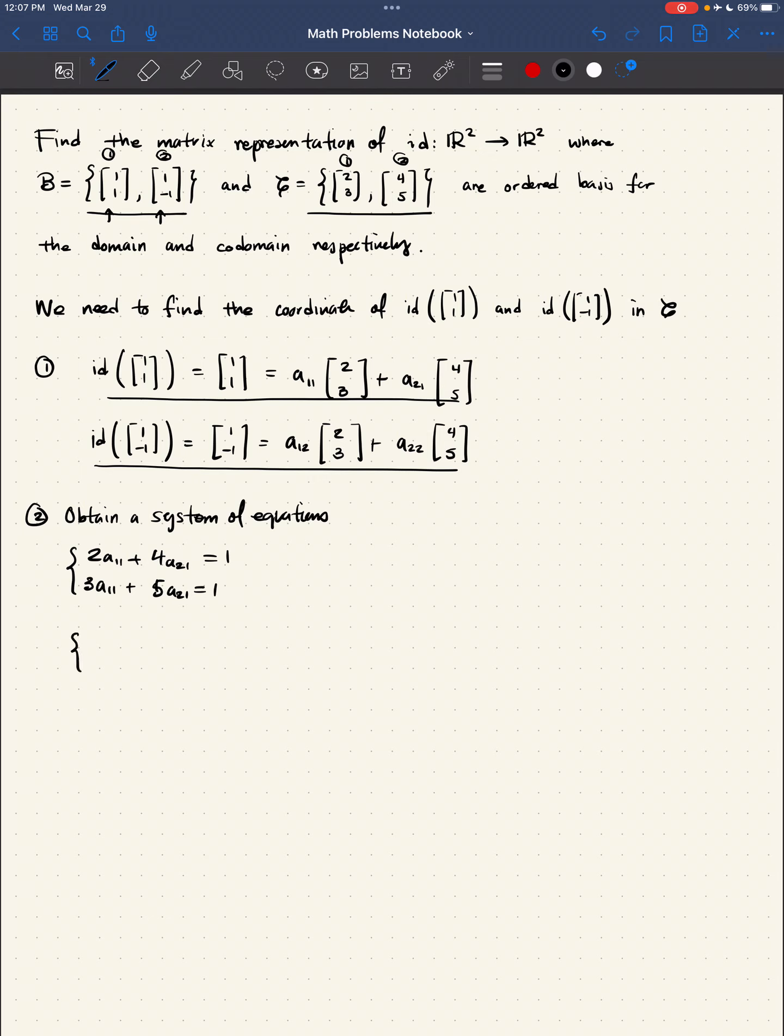The other system looks like 2a₁₂ + 4a₂₂, 3a₁₂ + 4a₂₂, this one being equal to 1, this one being equal to -1.